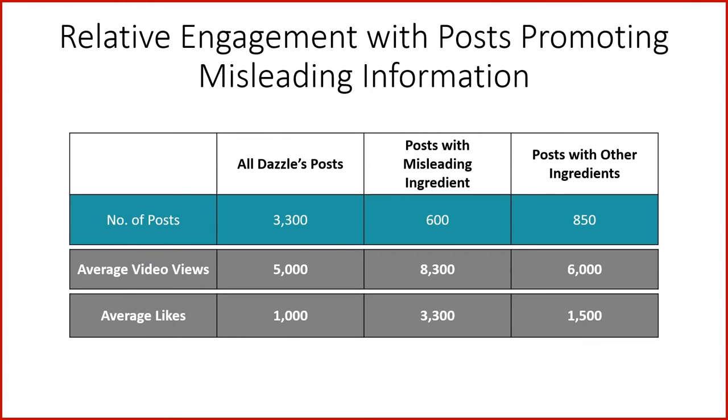We can also provide context for video views and likes by analyzing the average number generated by all posts, posts that mentioned the misleading ingredient, and posts that mentioned the four other ingredients. We found that posts promoting the misleading ingredient significantly outperformed all posts and posts mentioning the other ingredients. Taken together, we now have a nuanced picture of Dazzle's alleged bad acts — how frequently it was promoting posts with misleading information, both overall and relative to other ingredients, and how successfully these posts generated engagement. An expert retained by Pinnacle could conclude that Dazzle's social media strategy was consistent with an actor who knew the misleading ingredient was central to its competitive position.